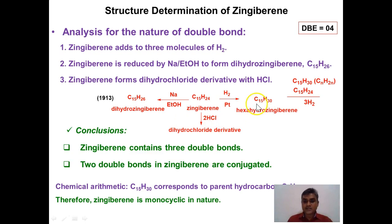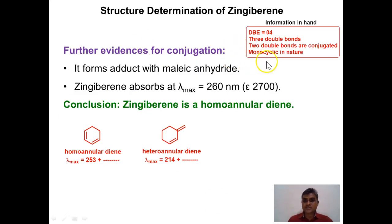The hydrogenation product C15H30 is a completely saturated molecule corresponding to the general formula CₙH₂ₙ, which corresponds to the presence of one ring. Therefore, since the hydrogenation product corresponds to CₙH₂ₙ, zingiberene is monocyclic in nature. Summarizing: four degrees of unsaturation — three double bonds (two conjugated, one isolated) plus one ring — account for all four unsaturations.